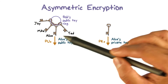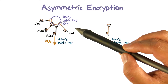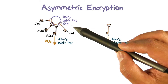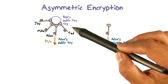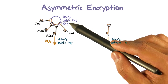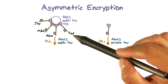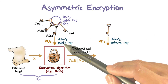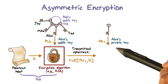Since public keys are meant to be known by others, in practice a user such as Bob would have a collection of public keys of his friends. For example, in this case Bob has the public keys of Alice, Ted, Mike, and Joy. Now, suppose Bob wants to send a private message to Alice.